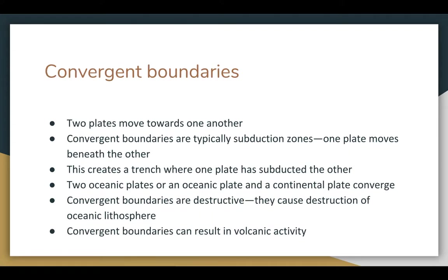Convergent boundaries are when two plates move towards one another. These are typically subduction zones, so one plate moves beneath the other — usually the one that's less dense. This creates a trench where one plate has subducted the other, and this can happen with either two oceanic plates or an oceanic plate and a continental plate. Convergent boundaries are destructive because they cause destruction of oceanic lithosphere, and they can also result in volcanic activity.